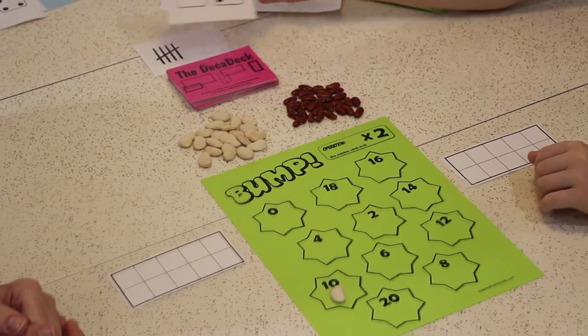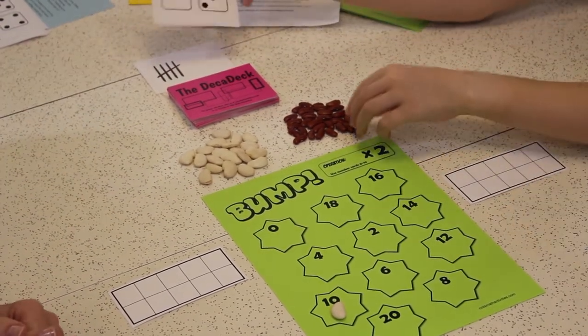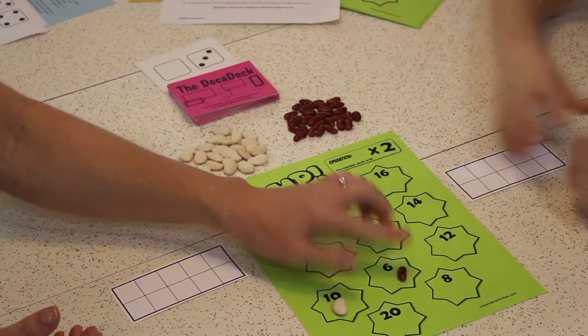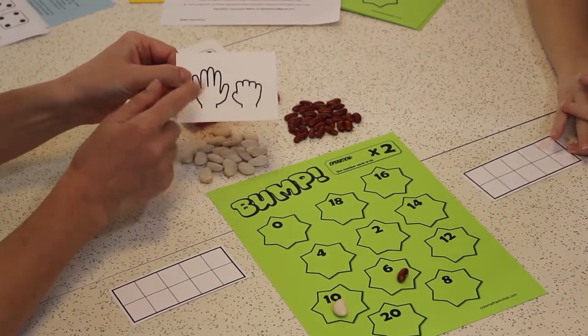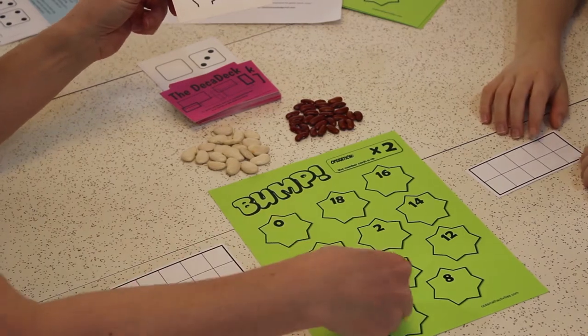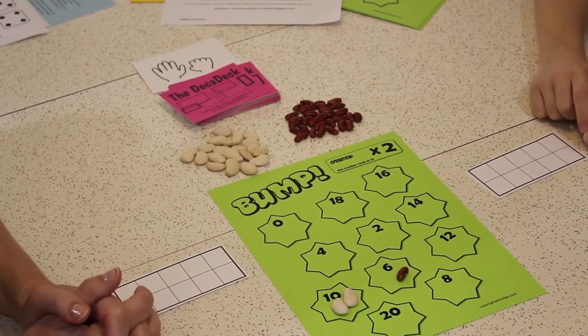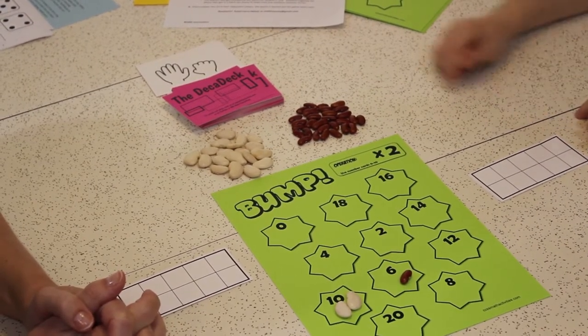Henry, your turn. So it's a 3. 3 times 2 is 6. So he puts his marker on the 6. Oh, I got another 5. 5 times 2 is 10. Now, since my bean is already there, I'm going to put another one there. So now I have 2 beans on the 10. Henry, I hope you don't pull a 5.